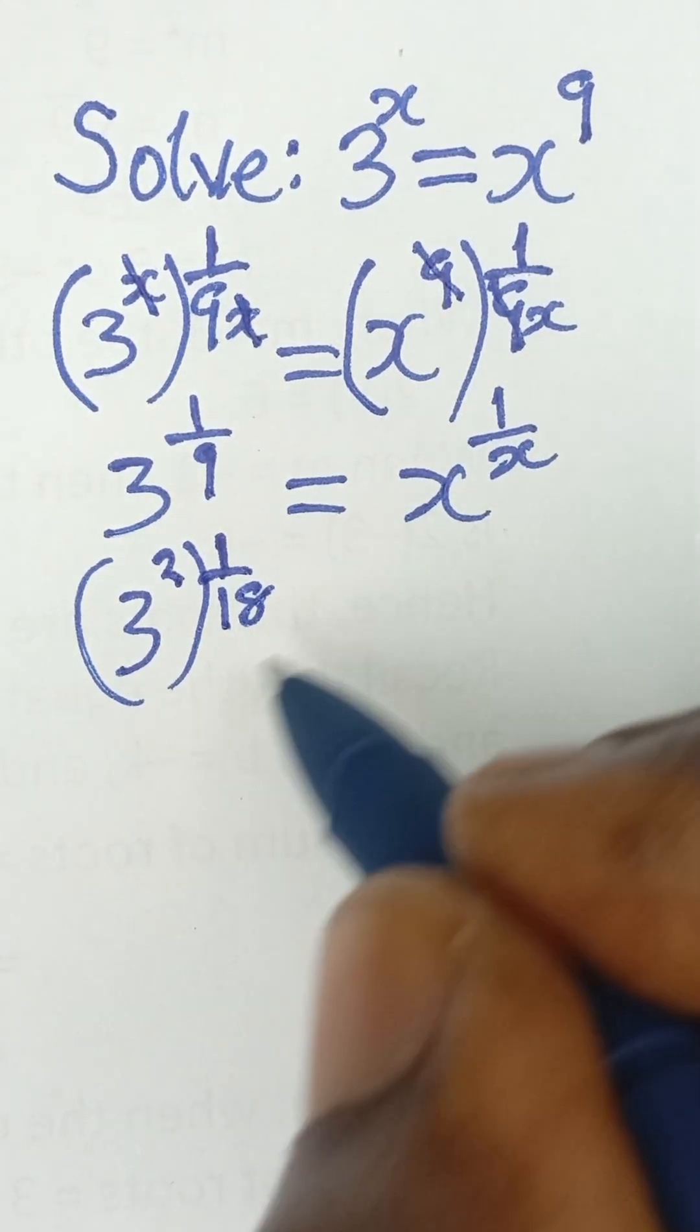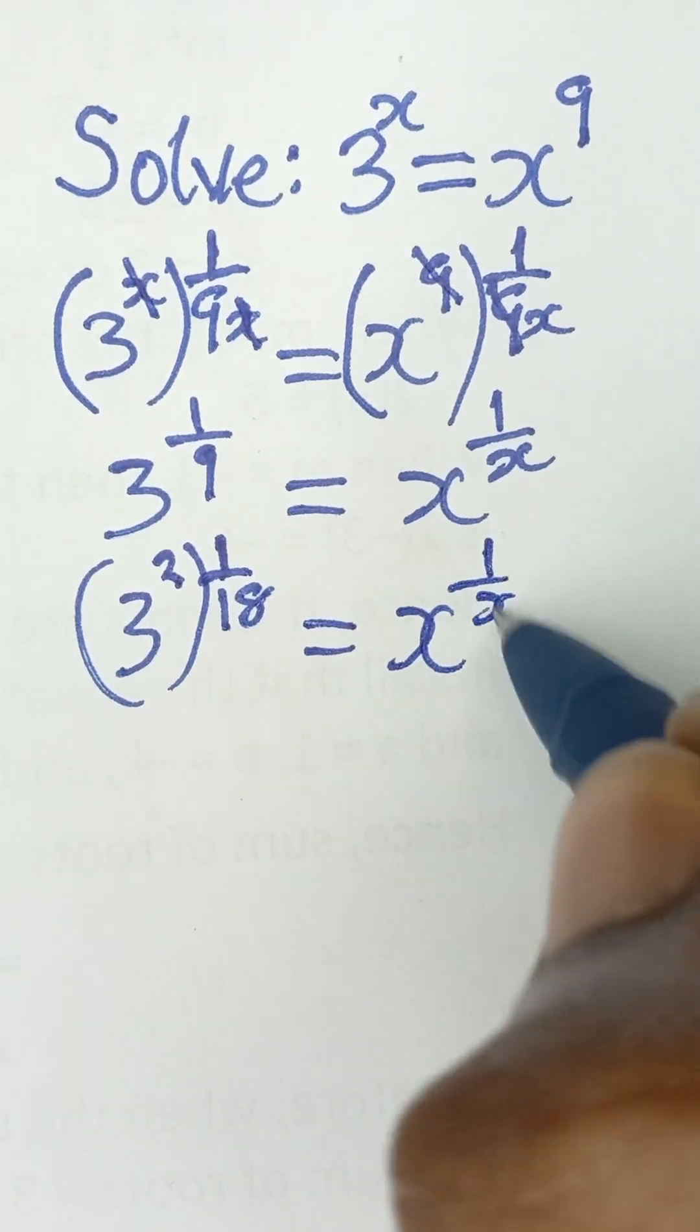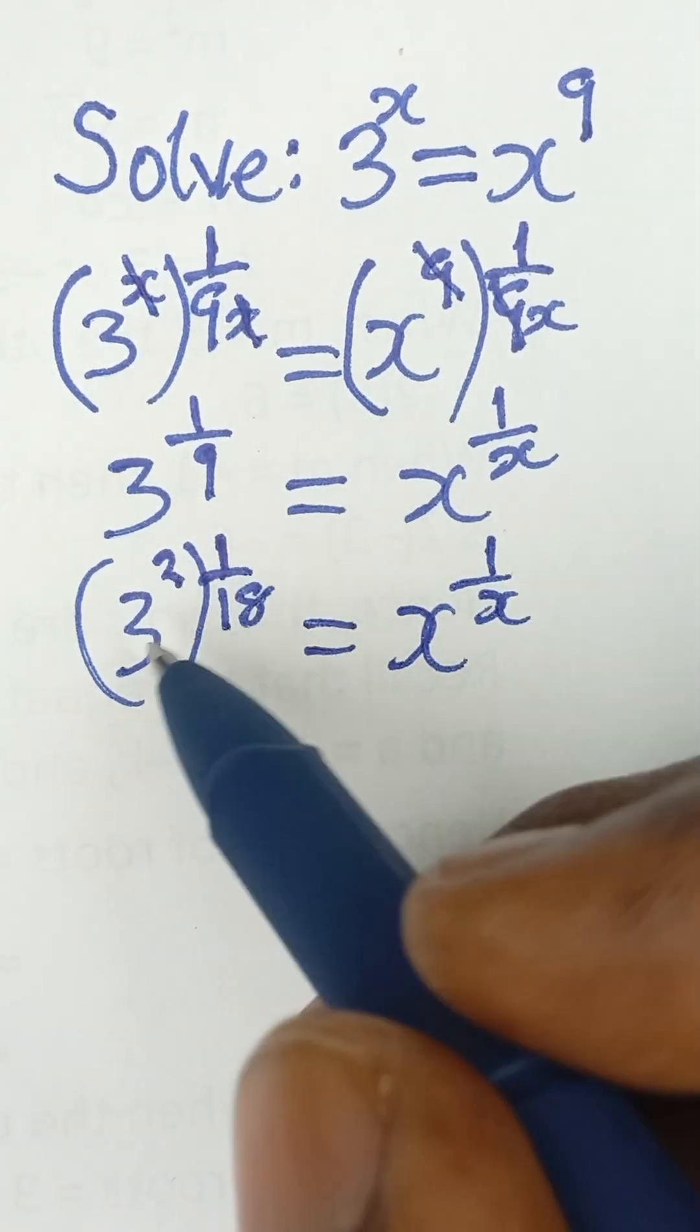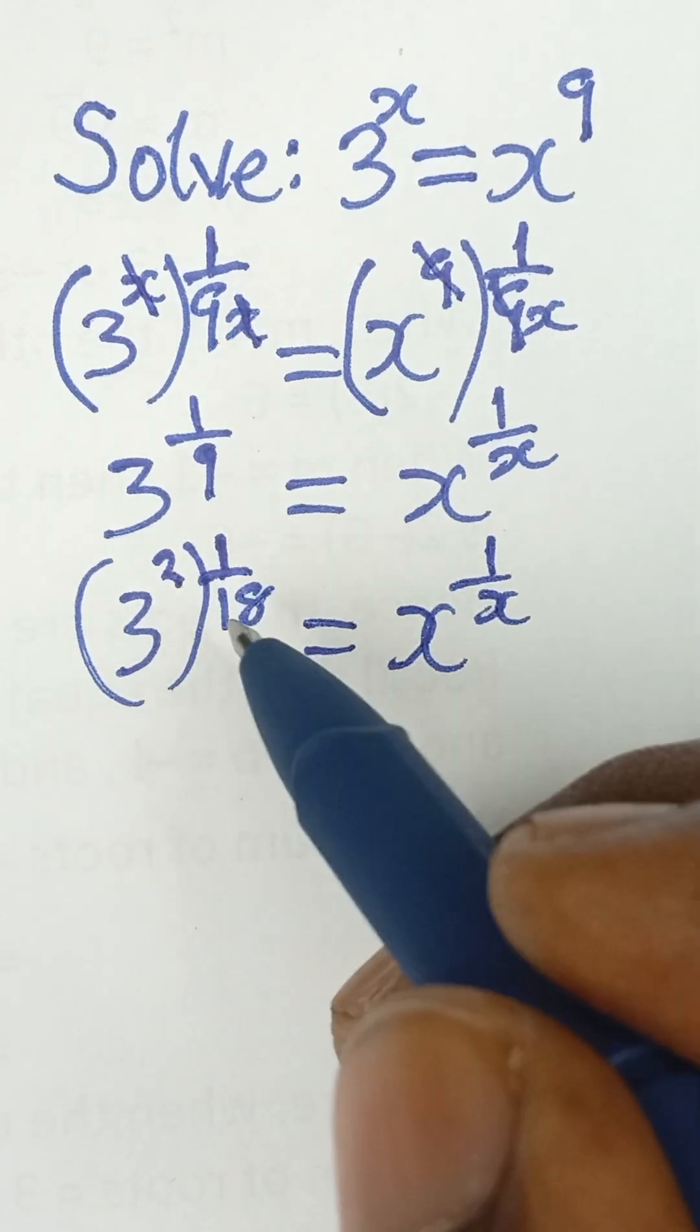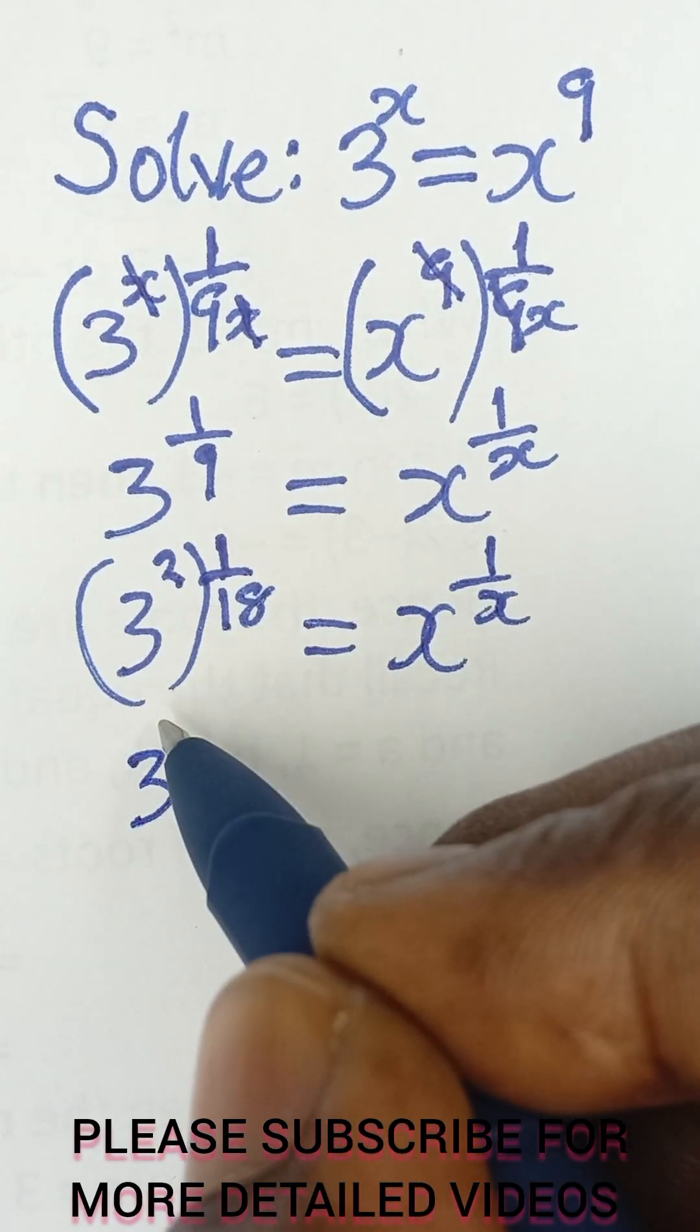And then it is equal to x raised to the power 1 over x. Then if I check, 3 raised to the power 2 is 9. It is not equal to 18 yet. So I can move on to 3 raised to the power 3.